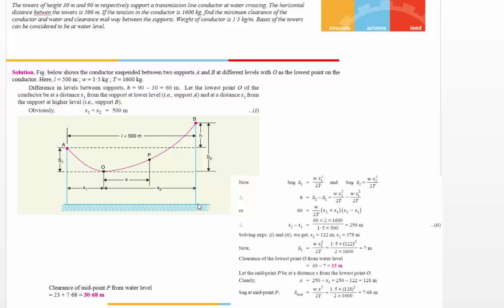And the tower is at a height of 90 meters. Between them, there is a water crossing area, so the distance between them has increased to 500 meters. Now the tension in the conductor is 1600 kg.